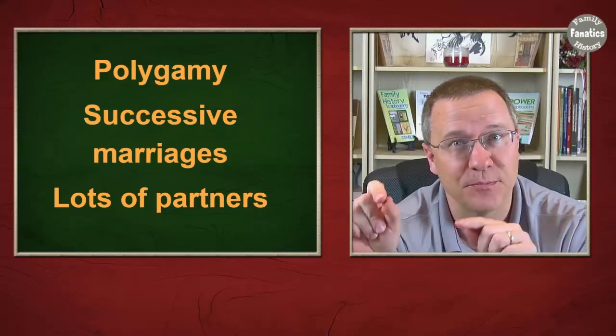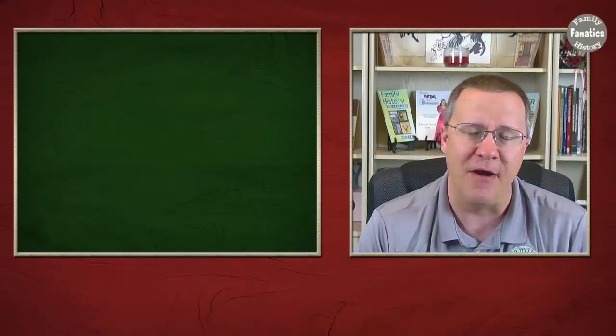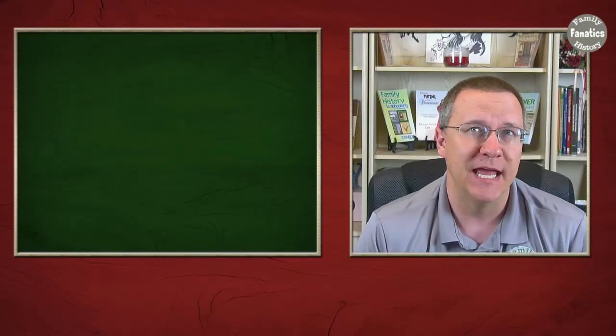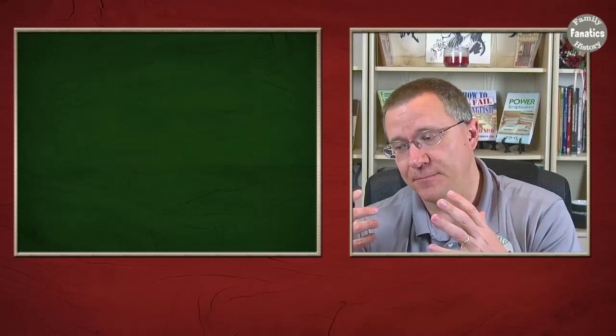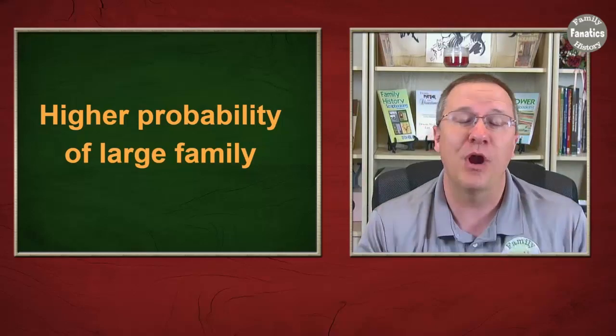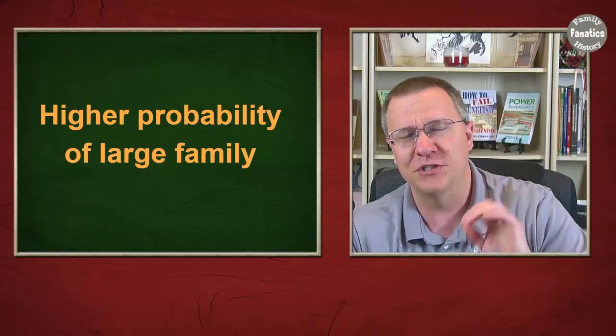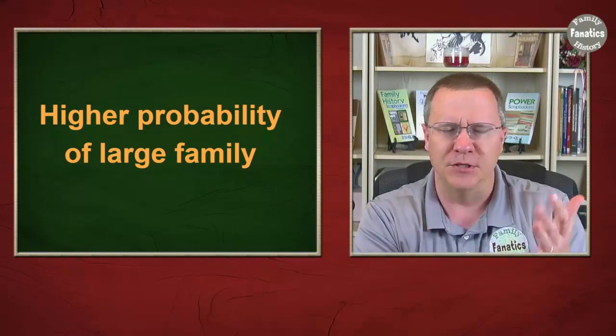And you'll notice that none of them are endogamy or pedigree collapse. If we have multiple spouses and then we have lots of children because of that, that's really going to equate to a higher probability of having a large family. Now in particular most of the time we're talking about polygamy or successive marriages.